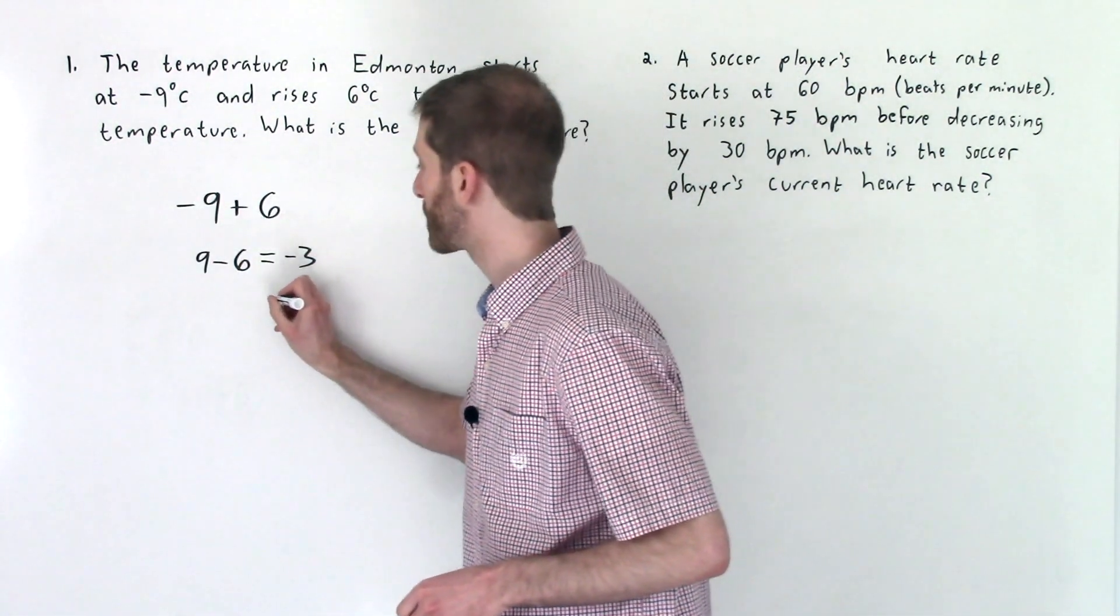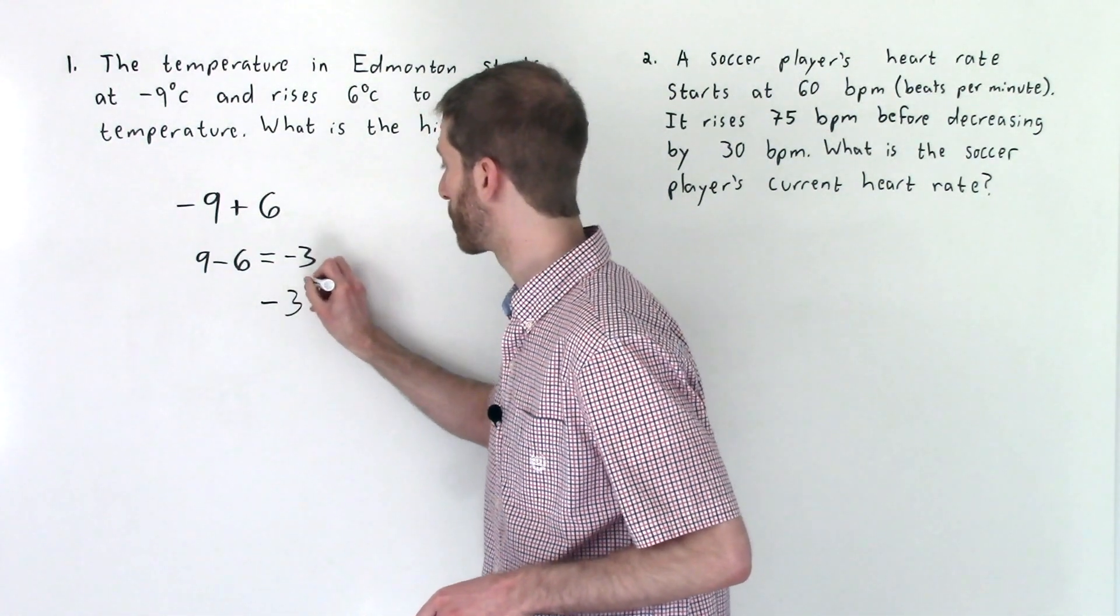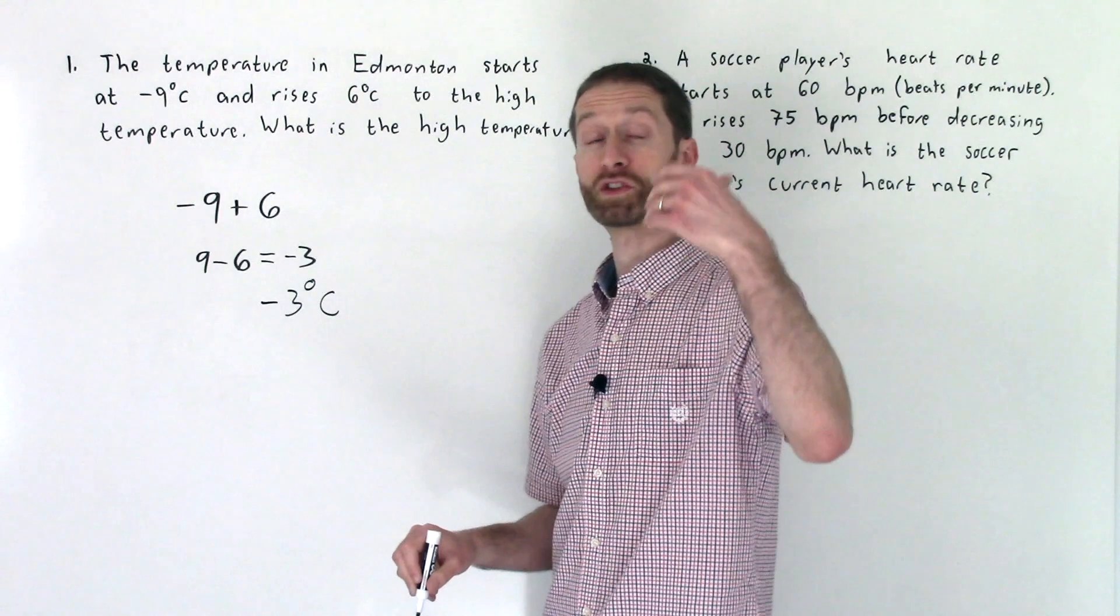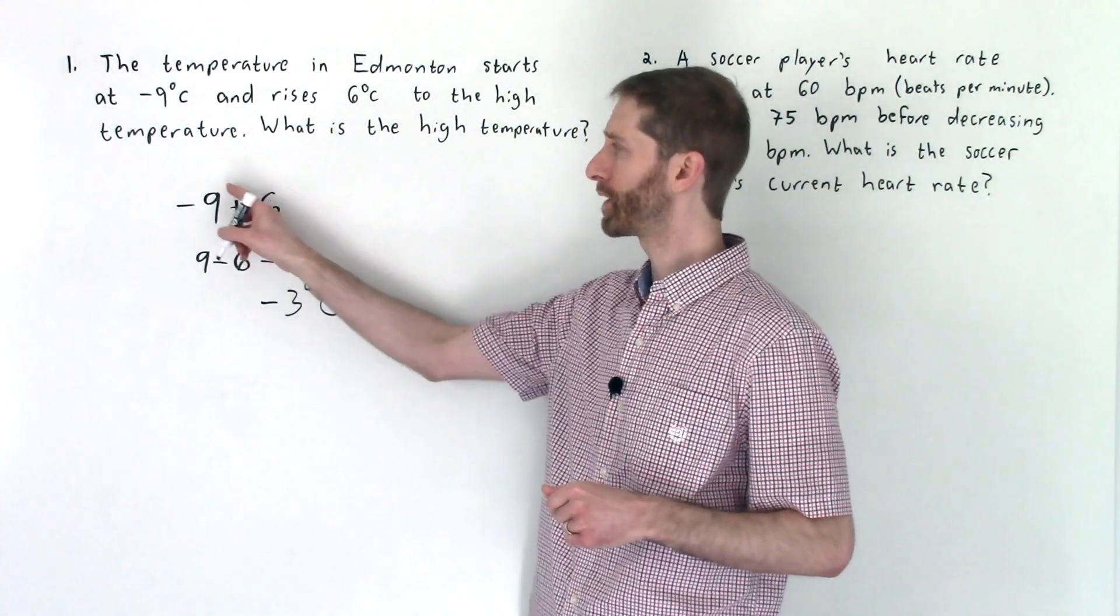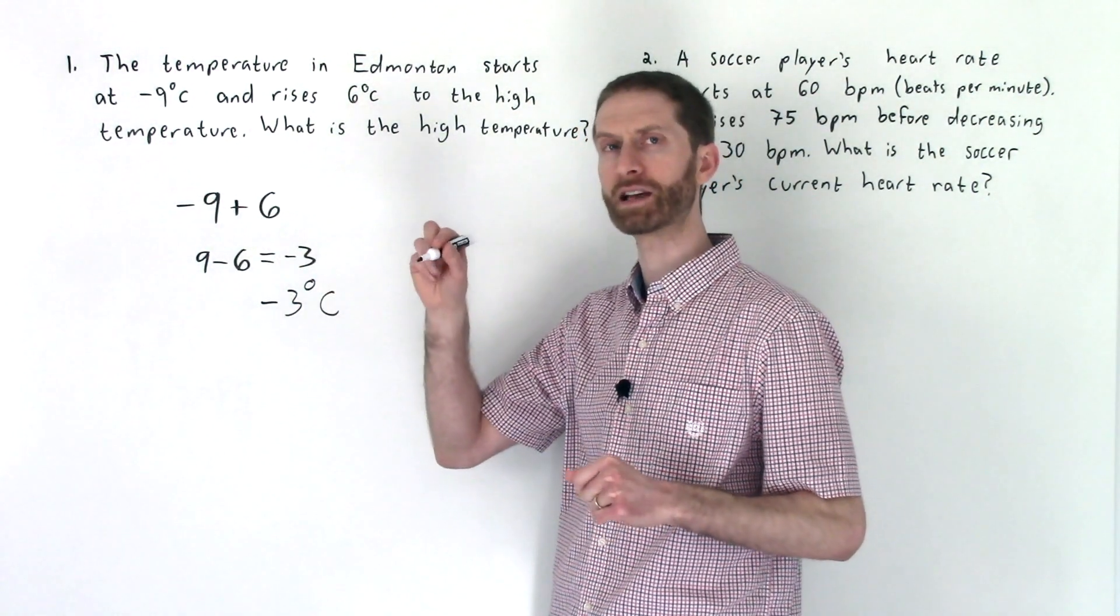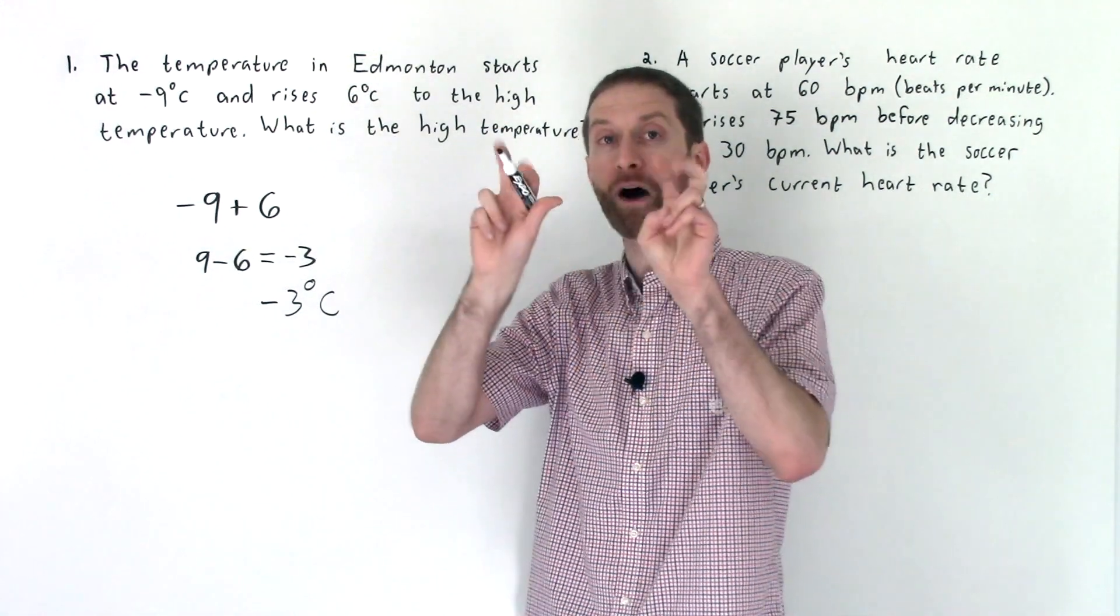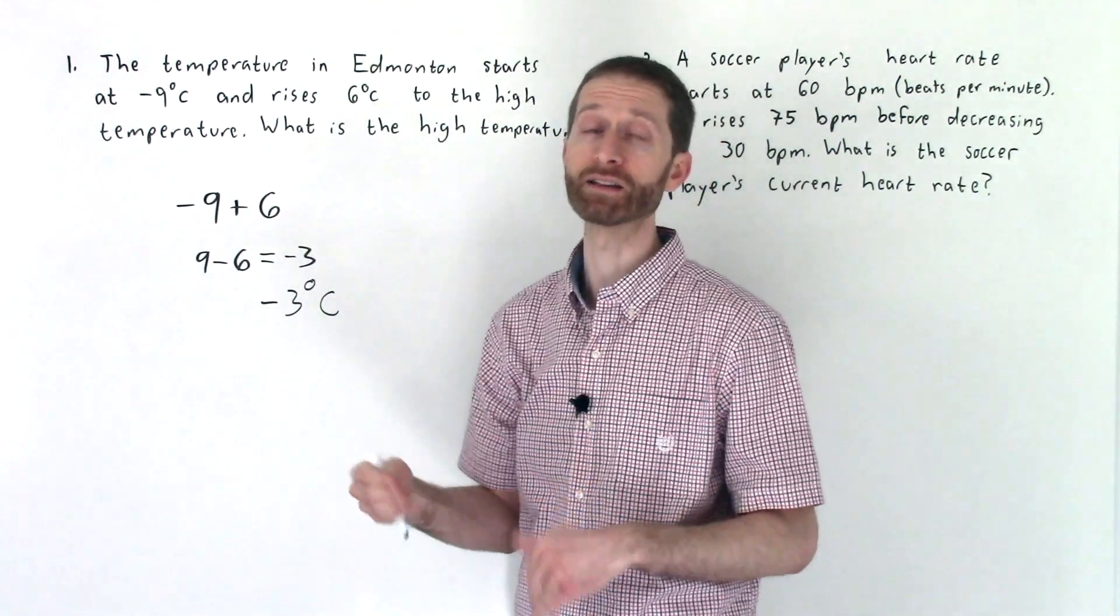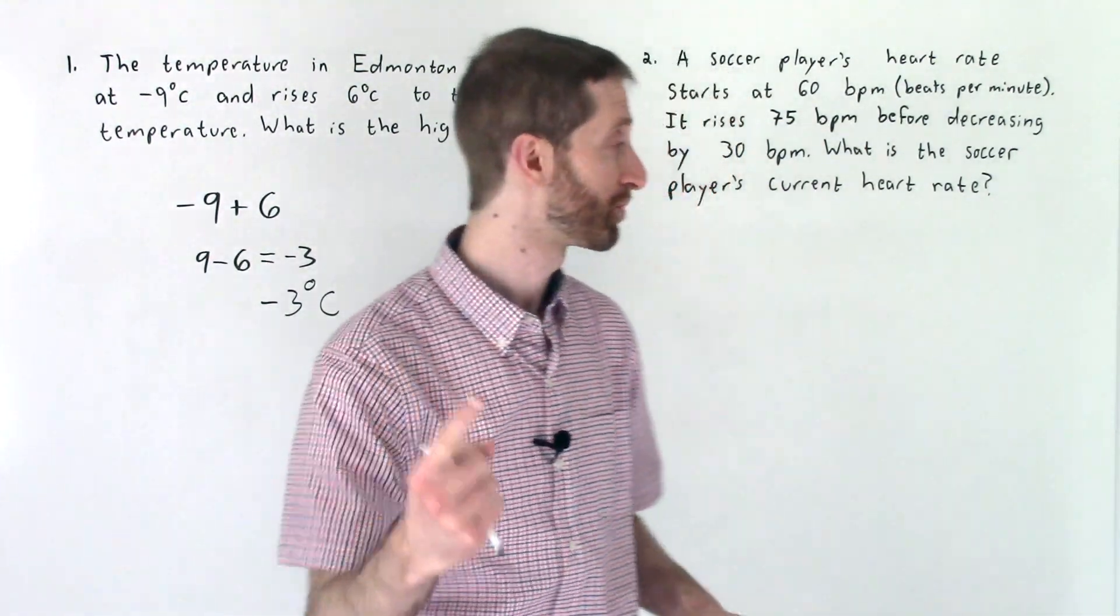Your final answer is the high temperature is negative three degrees Celsius. You can also check yourself with some number sense just thinking, well, if I start at negative nine and I gain six, I will not have gotten out of the negatives, right? To get out of there, we'd have to add at least nine. So we'd still stay in the negatives. Cool stuff.